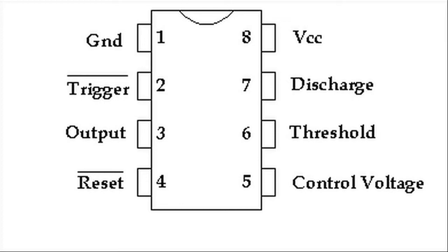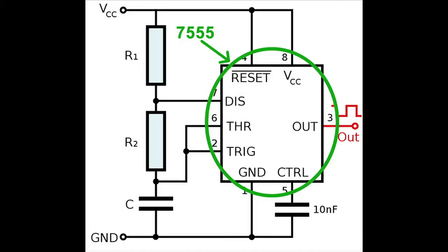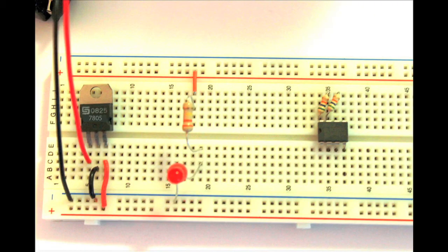Our circuit is centered around the 7555. Place the IC over the trough of the breadboard with pin 1 facing left. Pause the video and place the necessary components as they are shown.